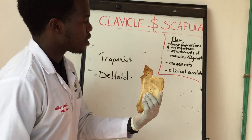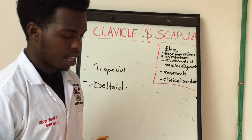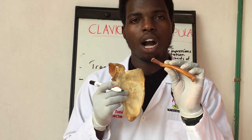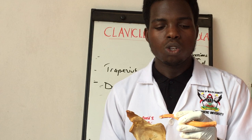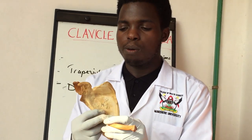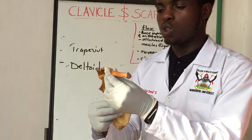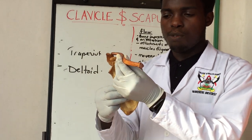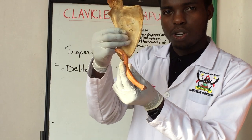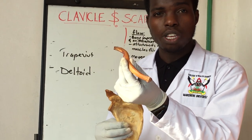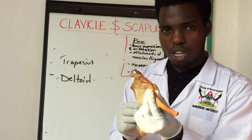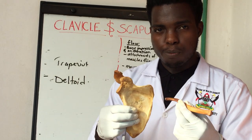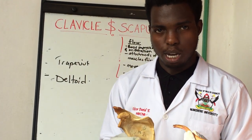Now let's look at the movements related to the scapula and clavicle together. The scapula can move upward — that is called elevation of the scapula. It can move downward — that is depression. It can also move forward, which is protraction, and backward, which is retraction. Those are some of the main movements related to the scapula.